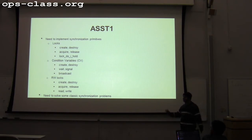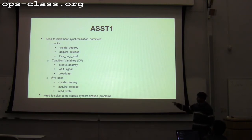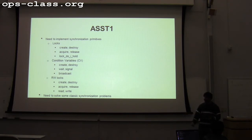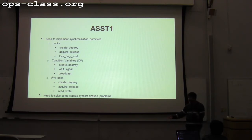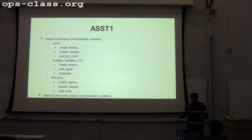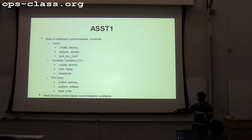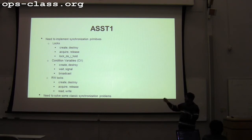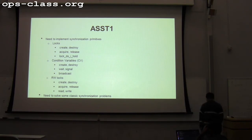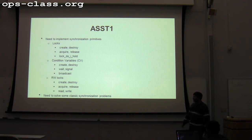do_I_hold is a boolean function that returns true or false. For condition variables, there is a special function called broadcast. When I lock a resource and someone else wants that same resource, they go to sleep on a wait channel (also called a wait queue). They're not in the run queue, so the processor will not execute them. When I release that resource, I wake whoever is on that wait queue. There is an implicit wait channel associated with a lock.